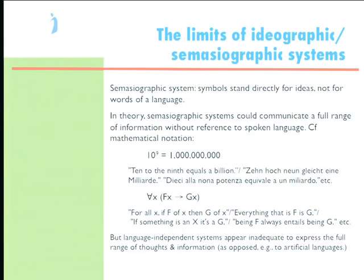These systems in which signs stand directly for ideas or concepts or things can do a great deal. The most extensive and important — a system we could not do without — is the sign system of mathematics and logic. The numeral five represents that number directly; it doesn't represent the word 'five.' If you see a five, you might think 'five' or 'cinq' or whatever, depending on your language, but it's the same thing — it stands for the number five.